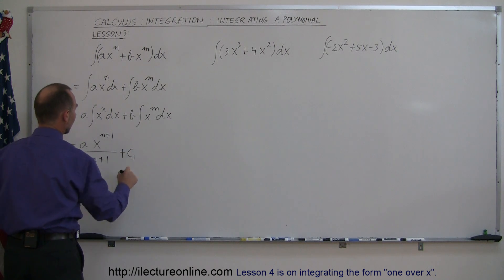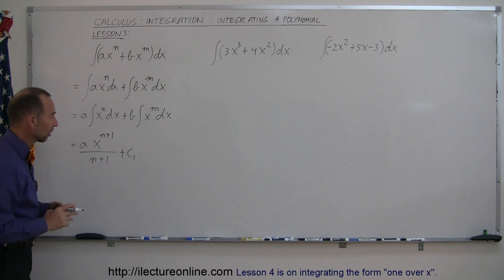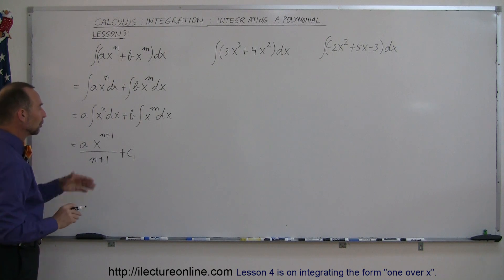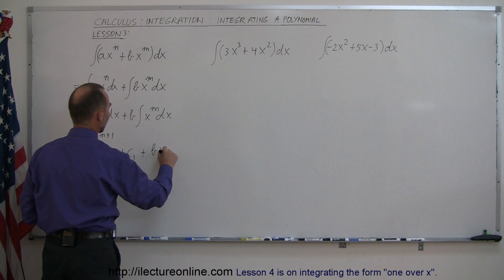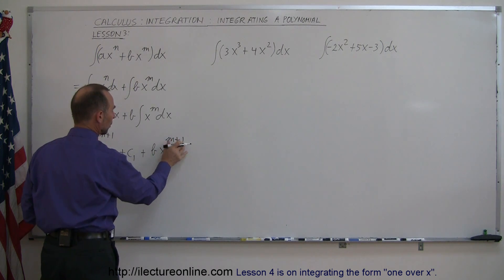We add a constant of integration, c1, as the constant of integration of the first integral. Then we do the same to the second one, so plus b times x to the m plus 1.